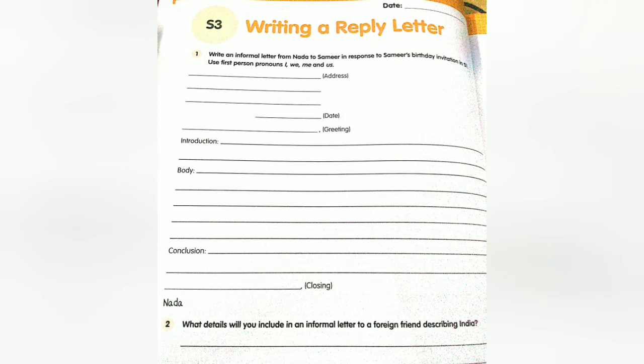Open S3, volume to page number 12: Writing a Reply Letter. Write an informal letter from Nada to Samir in response to Samir's birthday invitation. The address is: S1 House 32, 31st Street, Beirut, Lebanon. Date: 4th September 2013. Dear Samir — in the greeting and introduction: 'You do not have to thank me for the olives; they were yours as much as they were mine.'